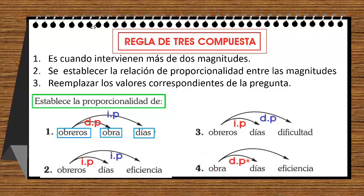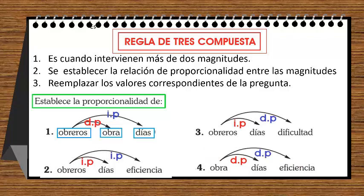Obra con días: ¿por qué obra con días es directamente proporcional? A más obras va a ser en más días — si uno es más, el otro también va a ser más, y eso es directamente proporcional. Obra con eficiencia viene a ser directamente proporcional.